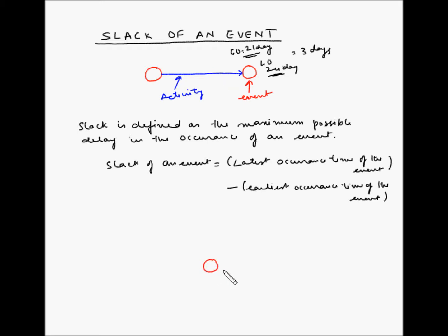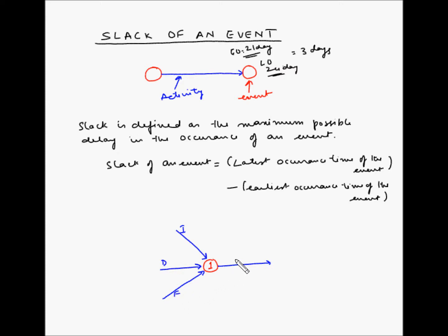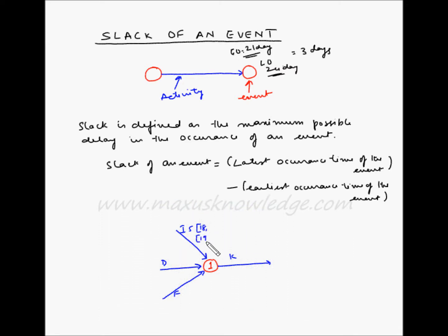Let us say there is event number 1, and there are three activities finishing at this node and one activity starting from this node. These activities are I, D, F, and K. Activity I takes 5 days to complete. The earliest start is the 18th day and the latest start is the 19th day. The earliest finish is the 23rd day and the latest finish is the 24th day.